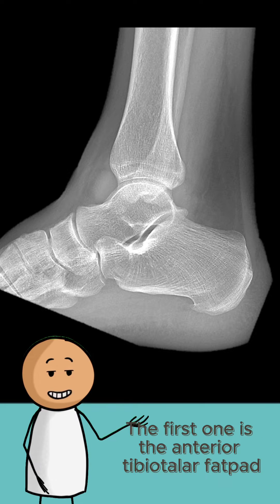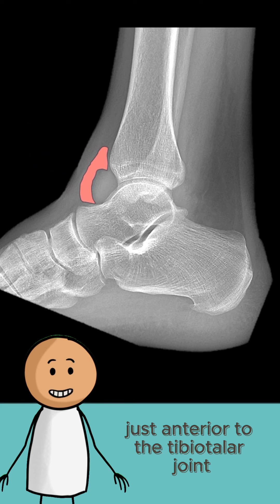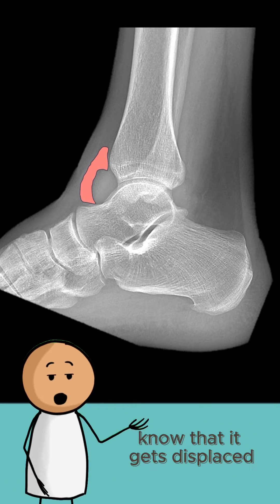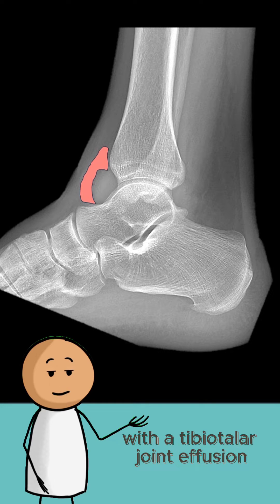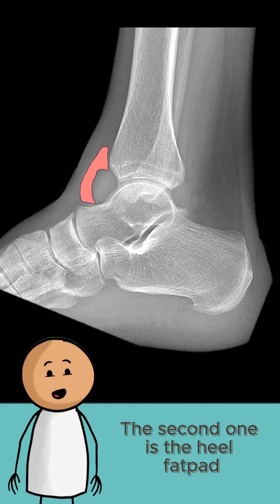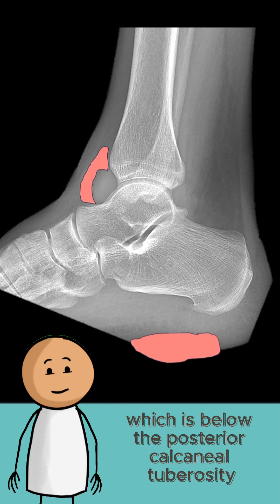The first one is the anterior tibiotalar fat pad, just anterior to the tibiotalar joint. Note that it gets displaced with a tibiotalar joint effusion.